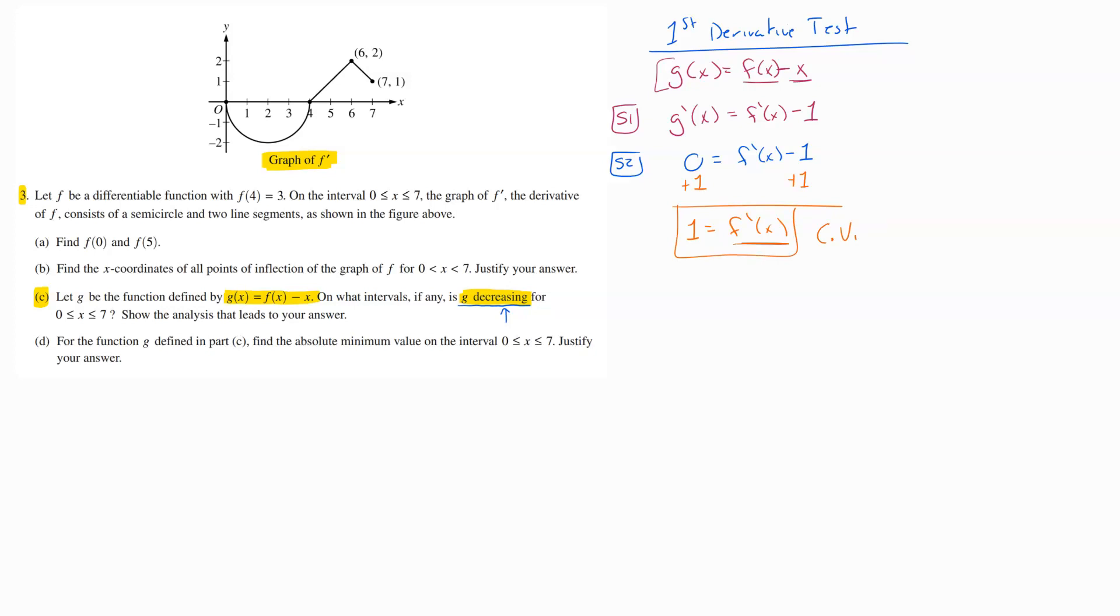F prime of X, that's my graph, that's what I'm looking at up here. So whenever that is one, and remember, it's equal to one, that is a Y value right there. So with that Y value, I know that that's where I would end up with a critical value. So there's my critical value from this graph.